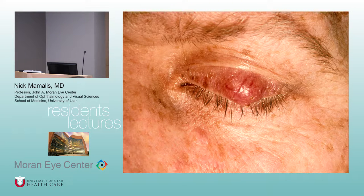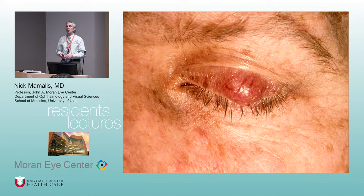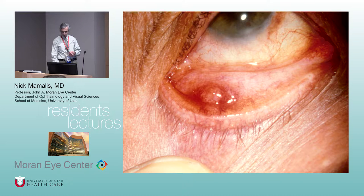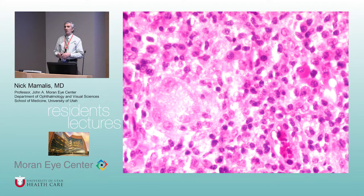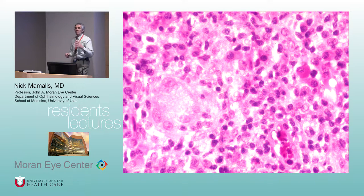Let's talk about some of the commonest entities that affect the eyelids. We see a nodule with some distortion of the lid margin. The differential includes chalazion, papilloma, or a cyst. This one is more acute — it's come on, it's painful, it's tender. So you think of a chalazion or a hordeolum. When we flip the lid over, we can see that sometimes these occur internally, sometimes externally. The classic pathology shows lipogranulomatous inflammation.